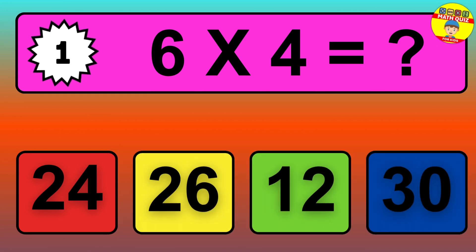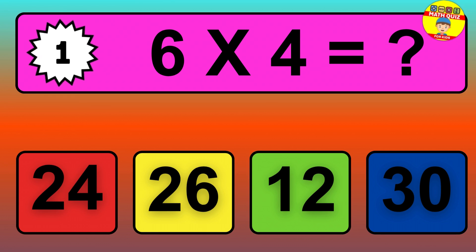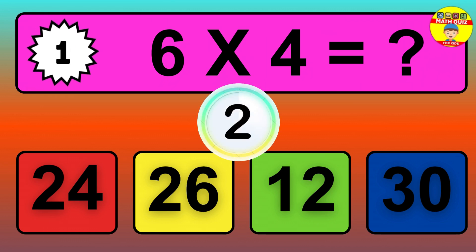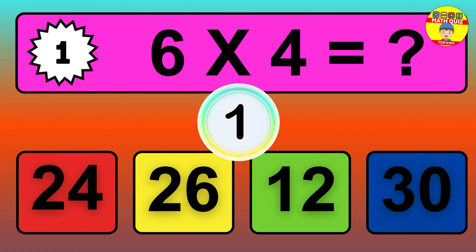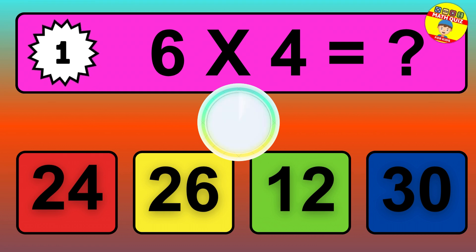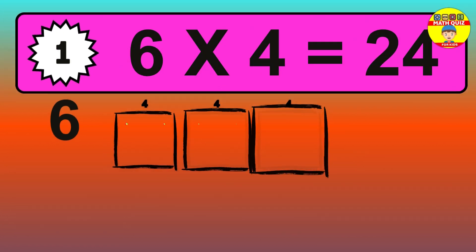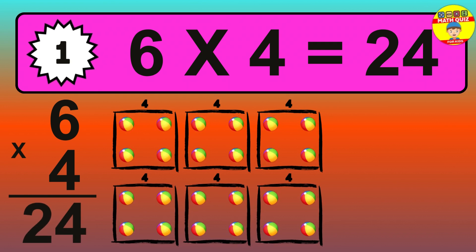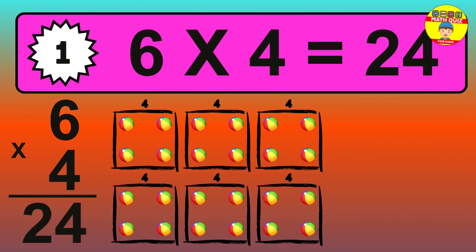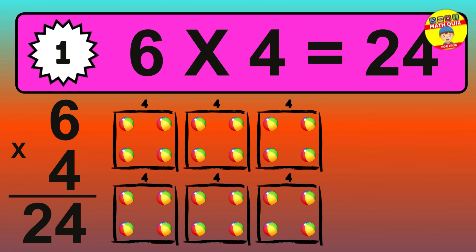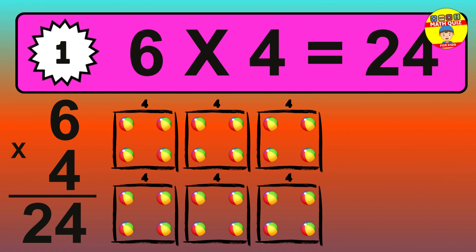Question 1. 6 times 4 equals what? The answer is 6 times 4 is 24. To calculate, we have 6 groups with 4 balls each one. So, how many balls do we have? 24 balls.